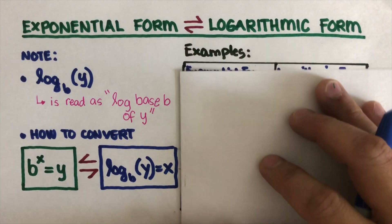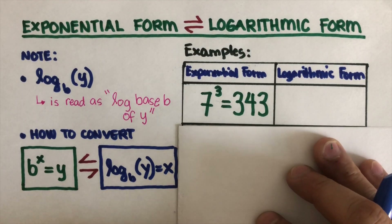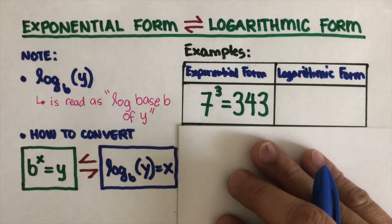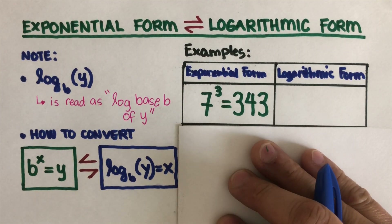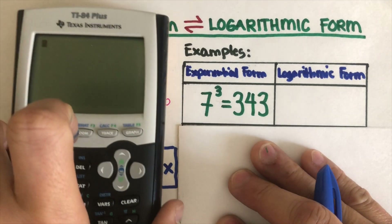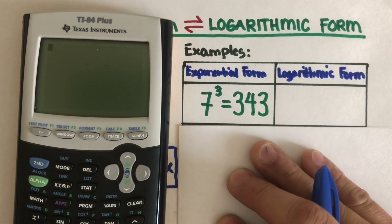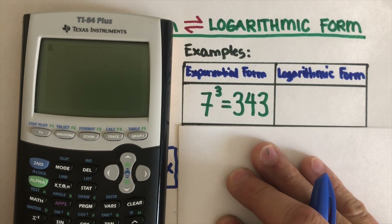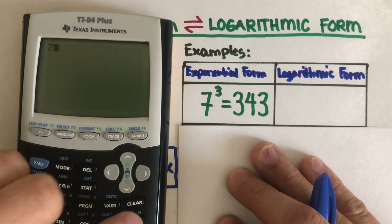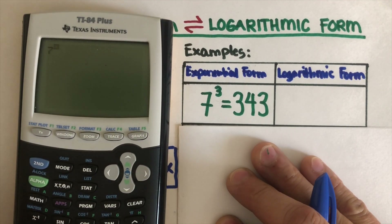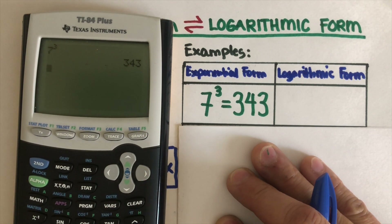Let's take this first example. I covered the rest so we don't get overwhelmed. So, let's start with the first one. If you have 7 to the exponent 3, it's actually 343.